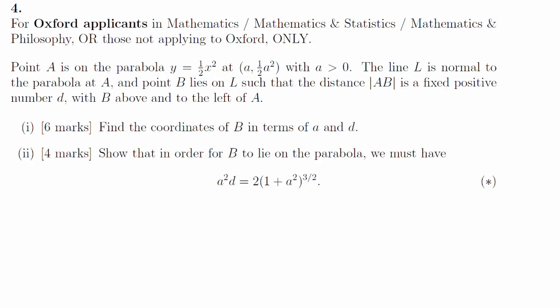Question 4. We need to do some normal coordinate geometry to write down the normal to the curve and then find, with a little bit of Pythagoras, the correct point that is a certain distance away, the coordinates are on screen now. Part 2. For this to lie on the parabola, xb squared over 2 would have to be yb. If we write that down and rearrange it and simplify quite a lot, we get the thing on the screen.